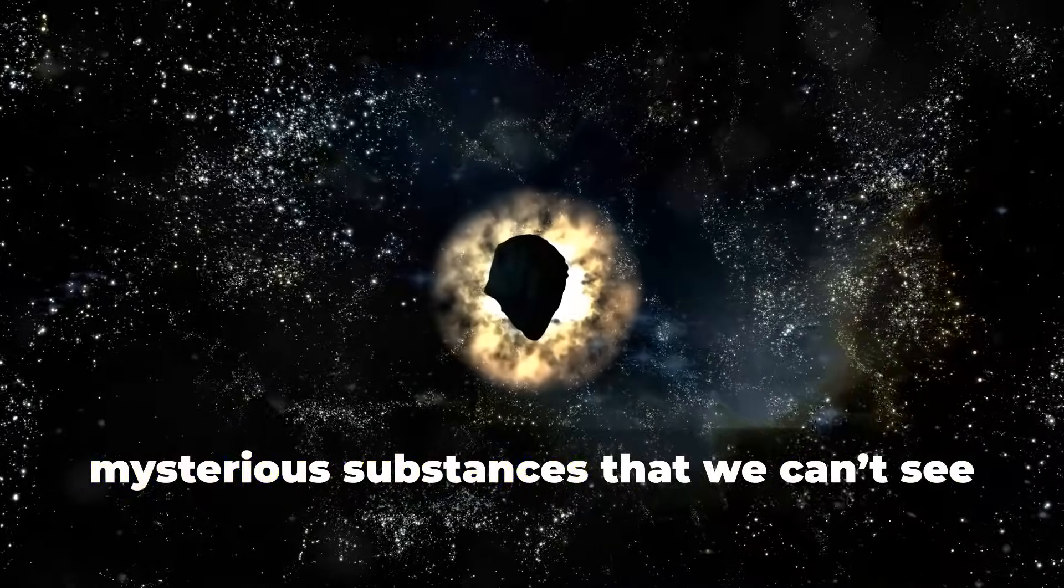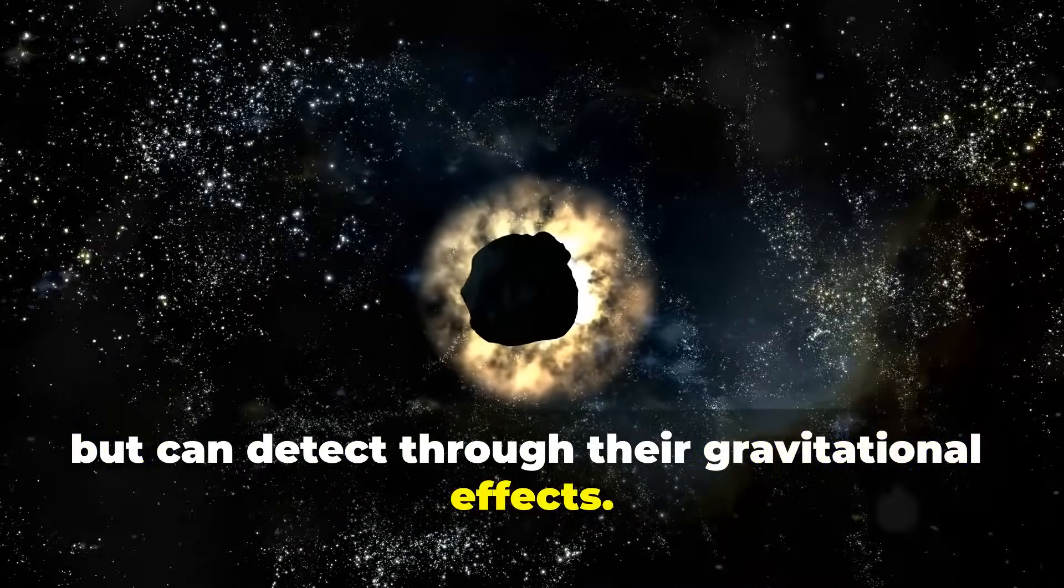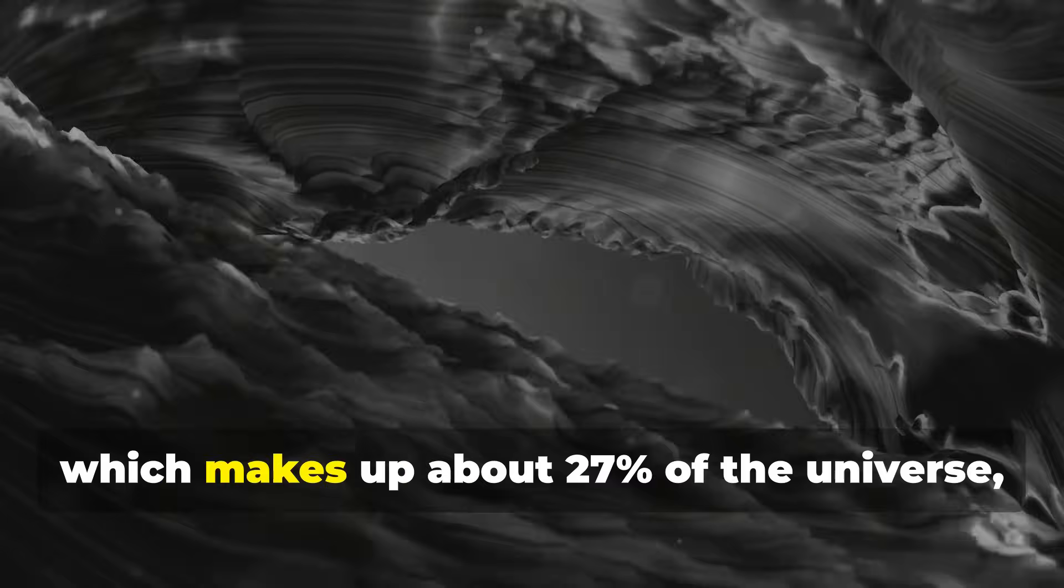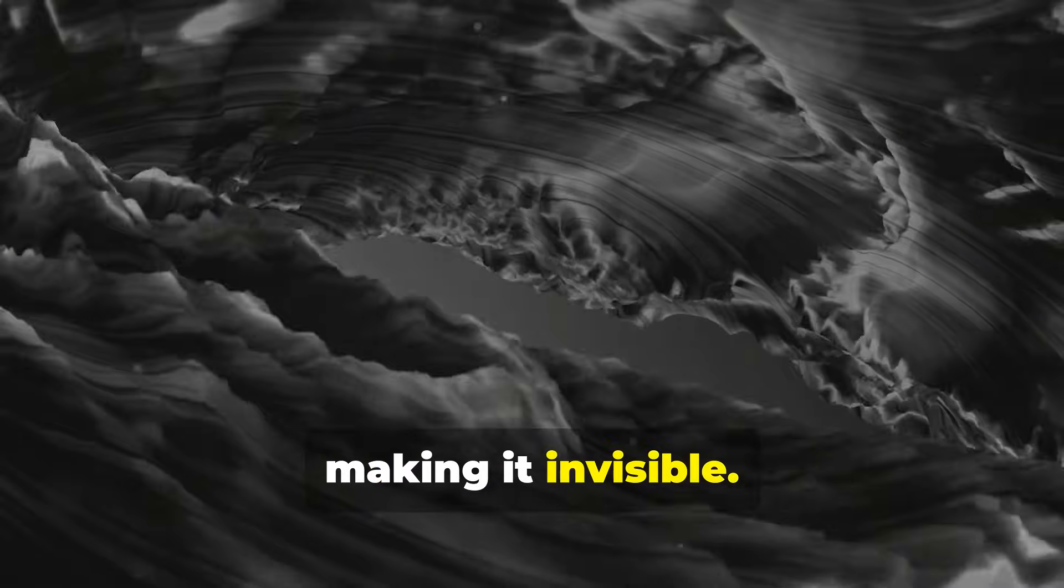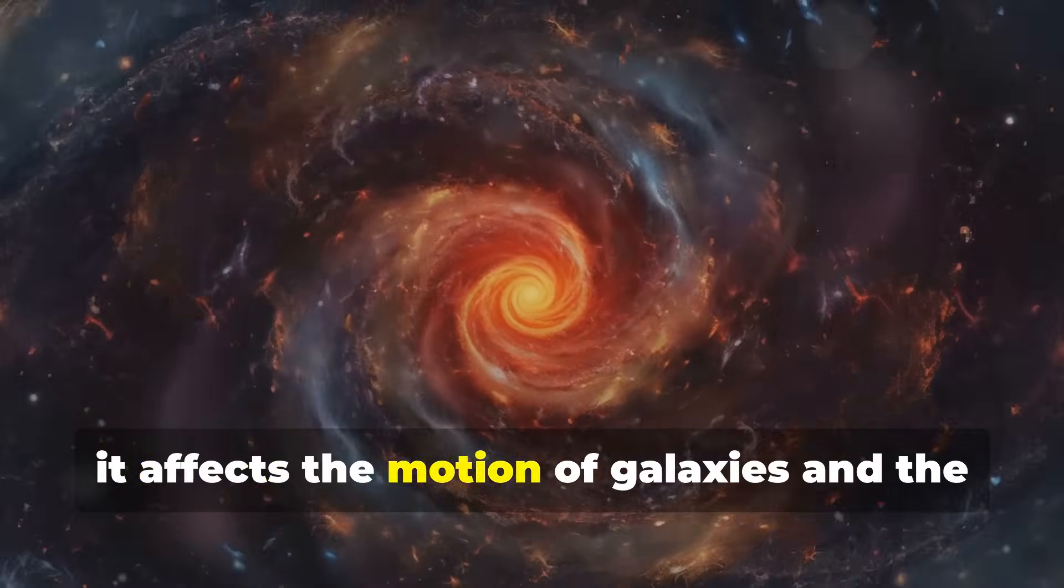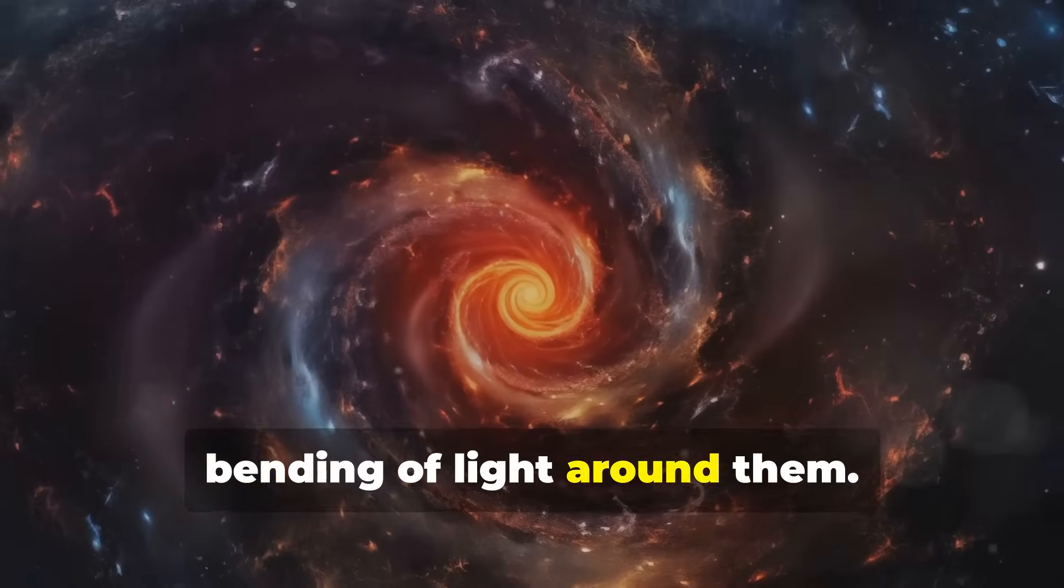First, dark matter, which makes up about 27% of the universe, doesn't interact with light, making it invisible, but we know it exists because of the way it affects the motion of galaxies and the bending of light around them.